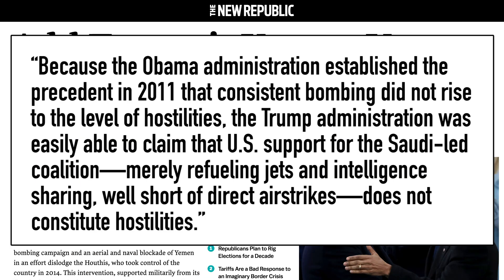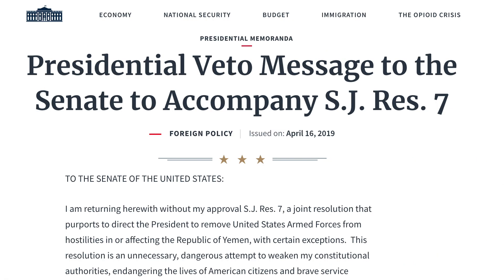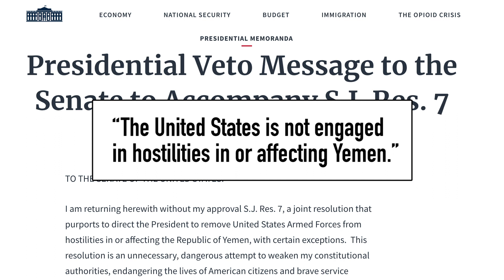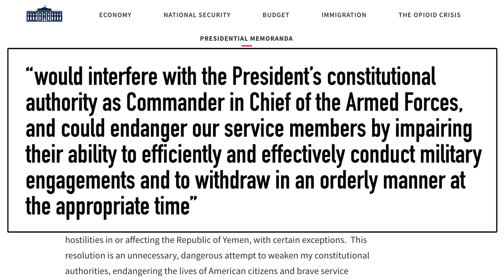The most beautiful part is that President Trump seems to agree with Obama. Because the Obama administration established the precedent in 2011 that consistent bombing did not rise to the level of hostilities, the Trump administration was easily able to claim that US support for the Saudi-led coalition — merely refueling jets and intelligence sharing, well short of direct airstrikes — does not constitute hostilities. In Trump's statement vetoing the Congressional resolution, he said: 'The United States is not engaged in hostilities in or affecting Yemen.' Technically, that's true — the United States is merely supporting Saudi Arabia, which is engaged in hostilities affecting Yemen.